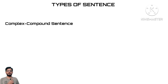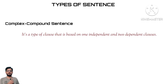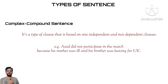The fourth type of sentence is called complex compound sentence. It is the type of sentence which is based upon one independent clause and two dependent clauses. For example, 'Asad did not participate in the match because his mother was ill and his brother was leaving for UK.' The first clause, 'Asad did not participate in the match,' is the independent clause. The remaining two clauses — 'because his mother was ill' and 'his brother was leaving for UK' — are both dependent clauses. So this is the example of a complex compound sentence.